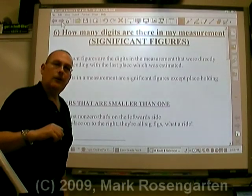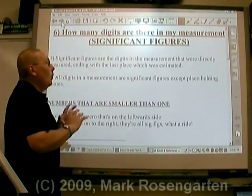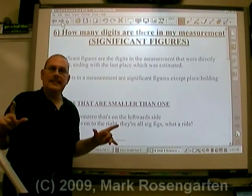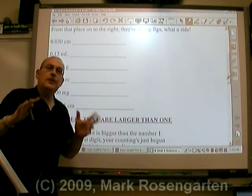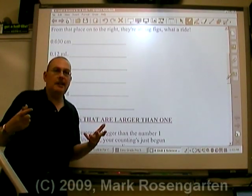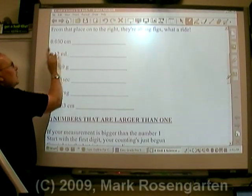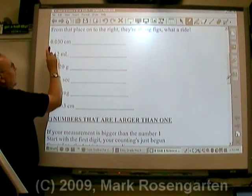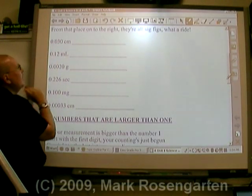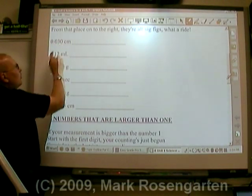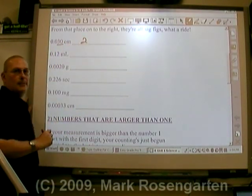Significant figures are the number of digits that were actually measured in your measurement. What's a significant figure? Any digit except for a place-holding zero. Getting used to significant figures is basically a matter of practice. Here's how it works: we're going to start with the first non-zero digit on the leftward side. Counting from the left, that's our first non-zero on the leftward side. From that place onto the right, they're all sig figs. So there are two significant figures in that measurement.